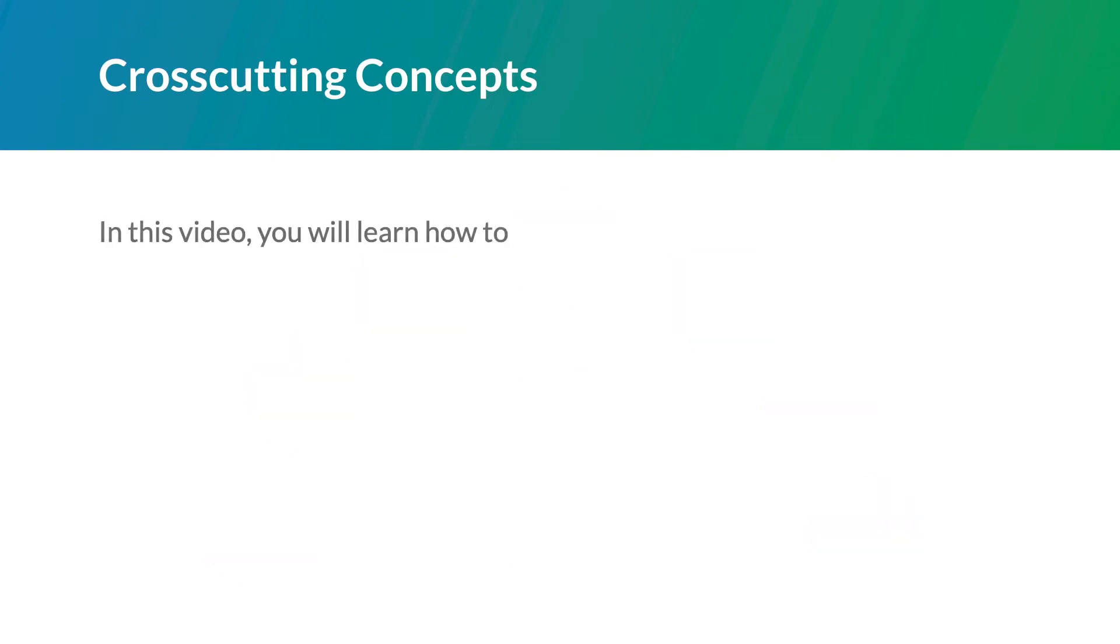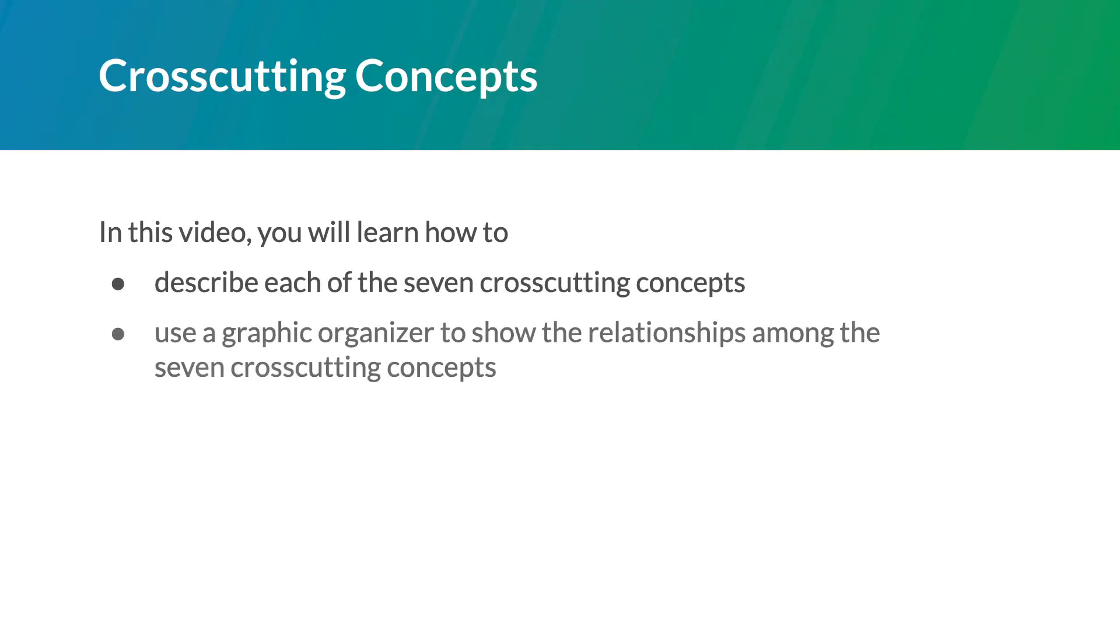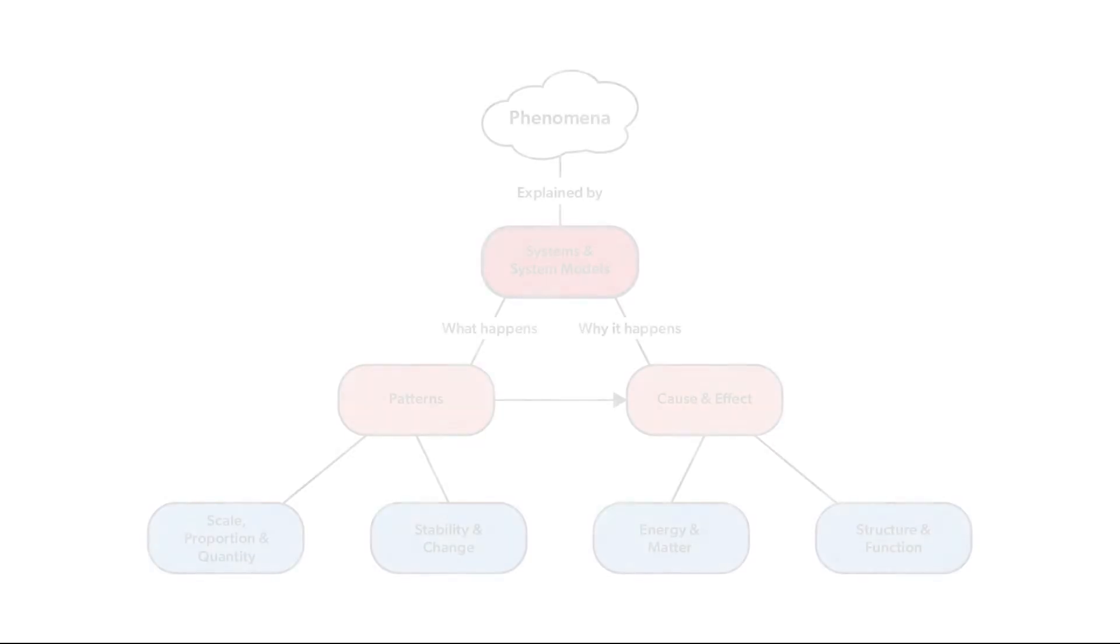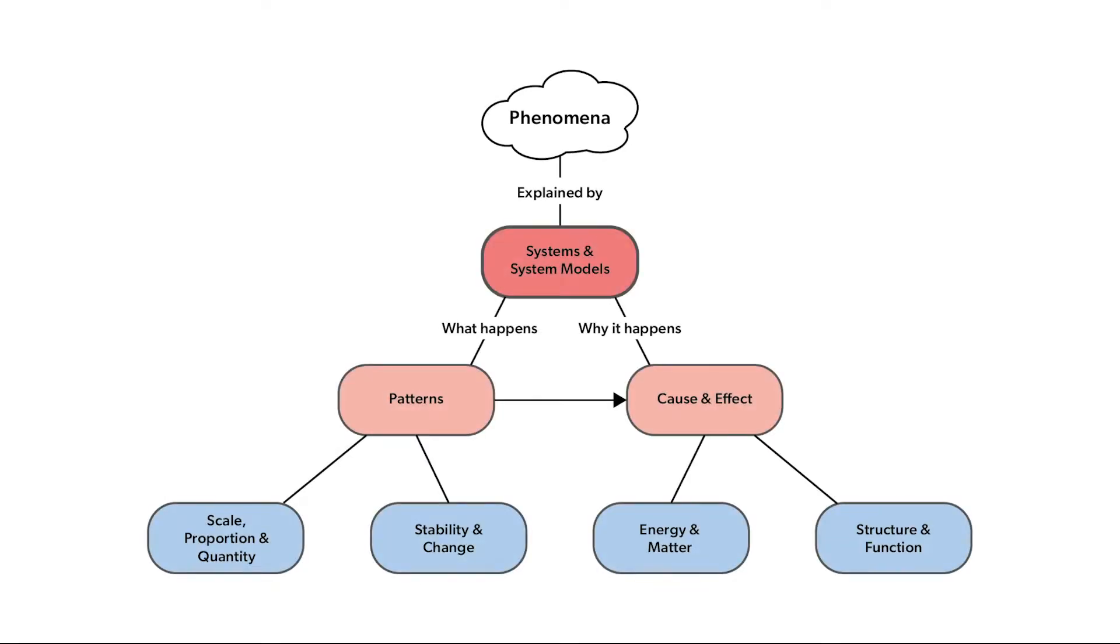In this video, you will learn how to describe each of the seven cross-cutting concepts and use a graphic organizer to show the relationships among the seven cross-cutting concepts. This graphic organizer shows one way to think about the cross-cutting concepts. We will go through the graphic organizer and describe each one. We will also explain what the arrow means.